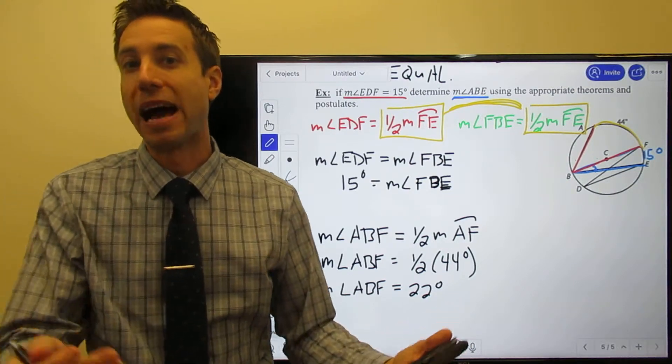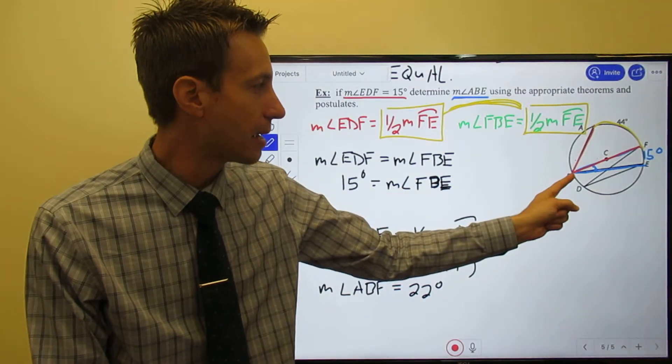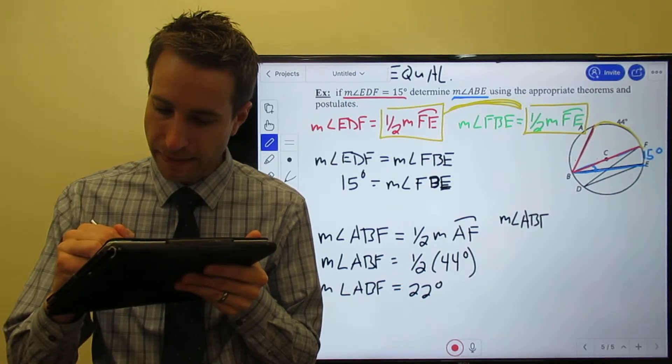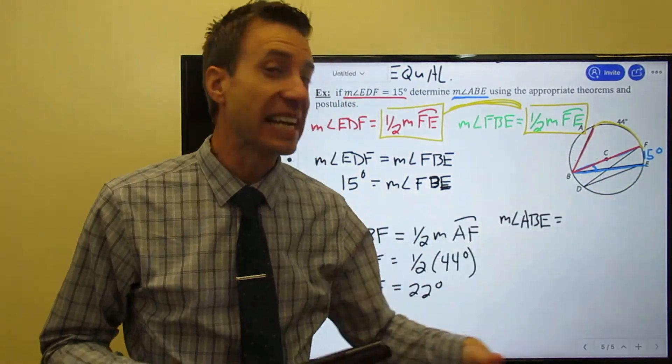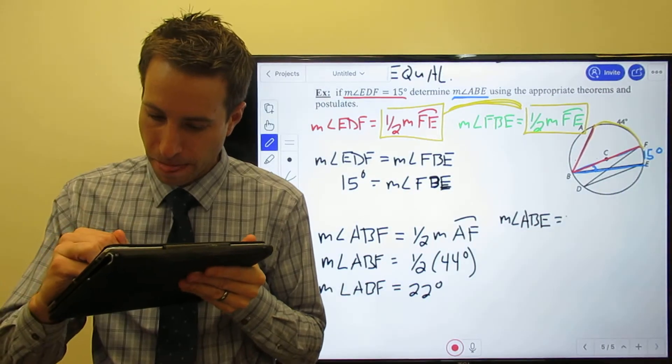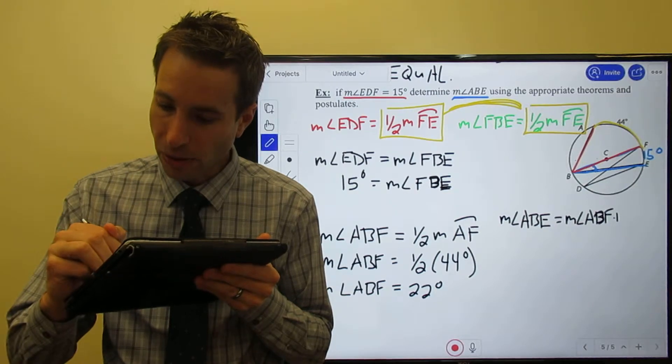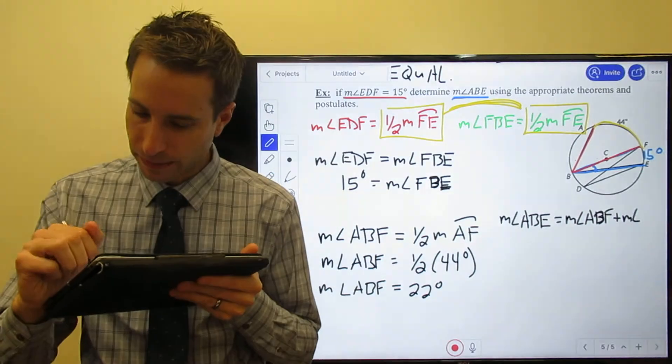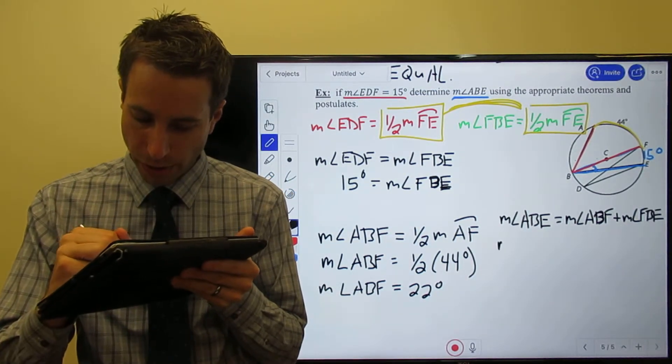Okay, so now we have all the information I need to actually solve the problem. I'm trying to find the measure of angle ABE. This is the angle addition postulate. The measure of angle ABE is equal to the measure of angle ABF plus FBE, which I know both of those.